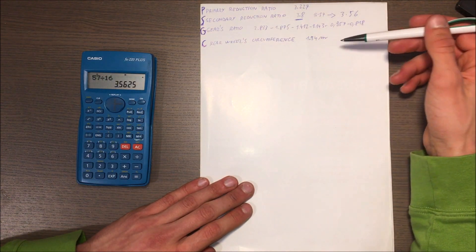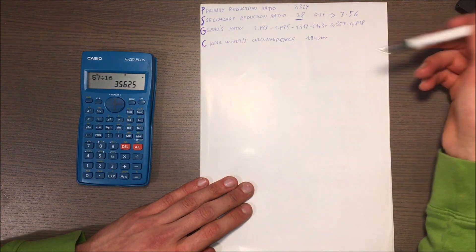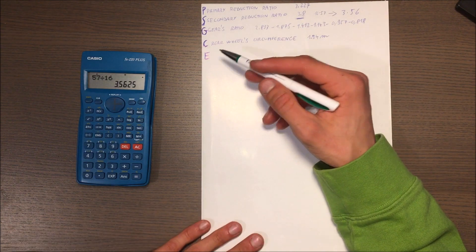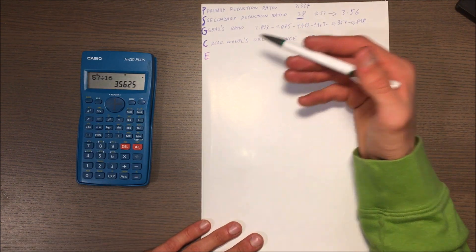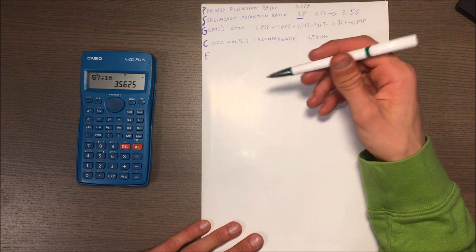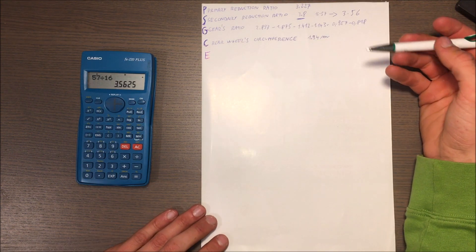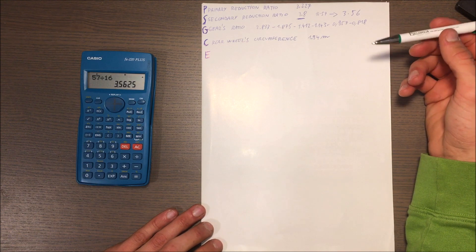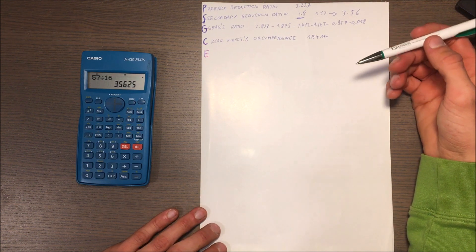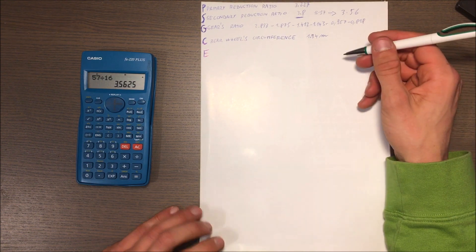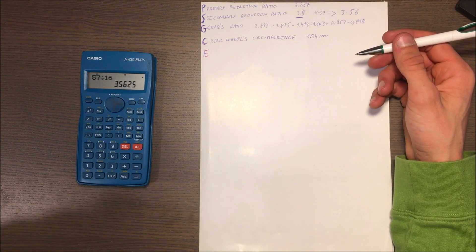Then we've got E, which is the error that your speedo is making, because as you know it's not that precise. It's not that difficult to calculate it. For example, in my case with a GPS on my phone, I saw that if I go at 70 kilometers per hour, the speed read on the speedo is 80 kilometers per hour.